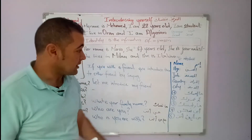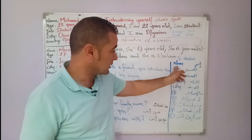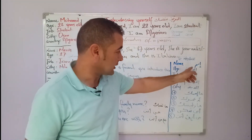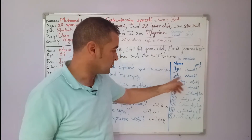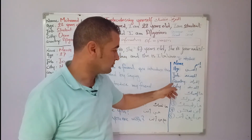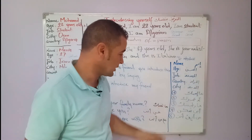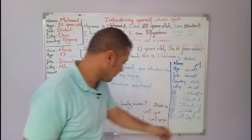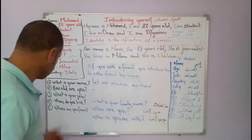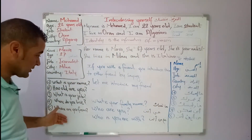So, name in Arabic — name, age, job, country, city. These are the translations of these words.